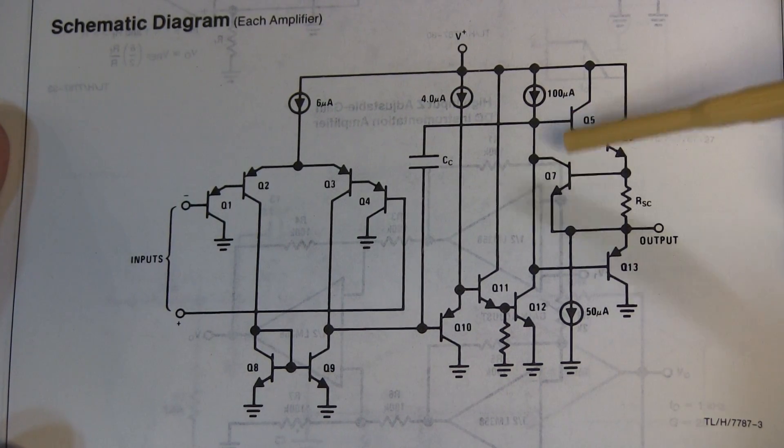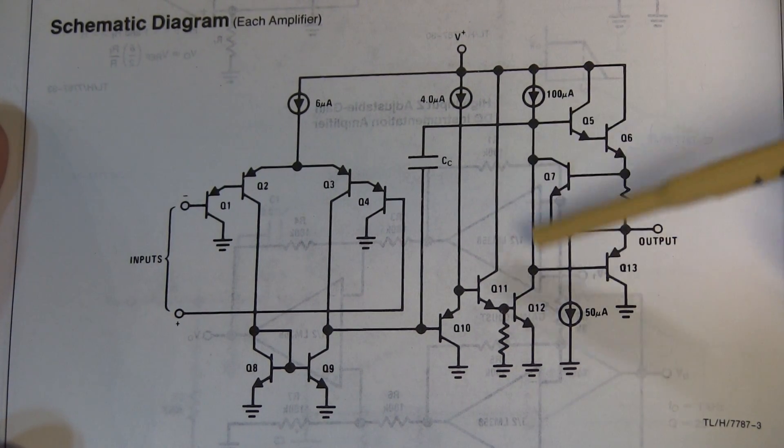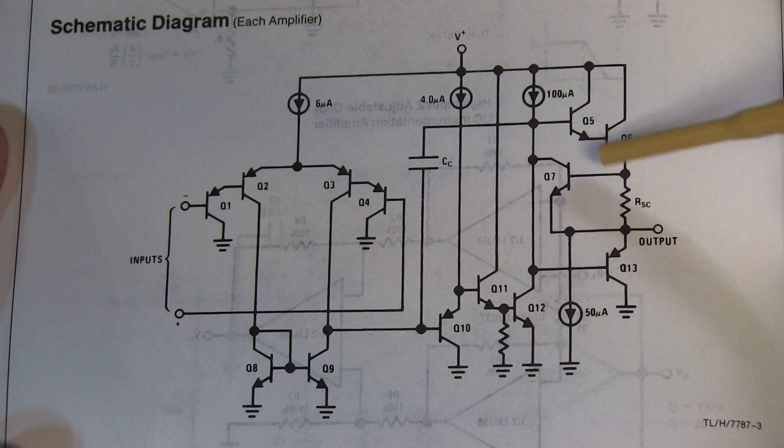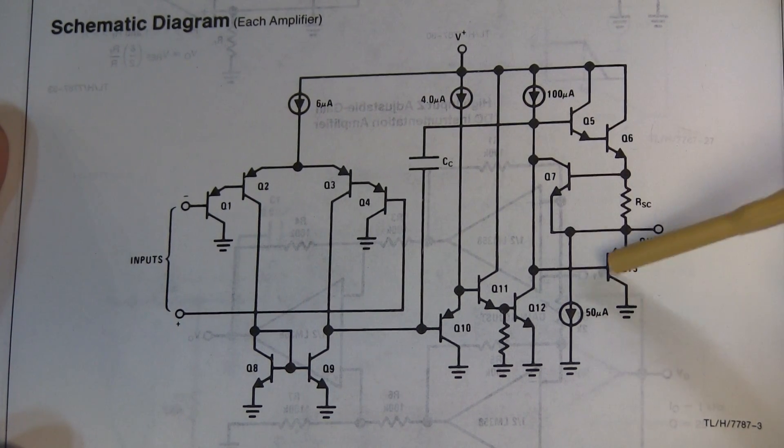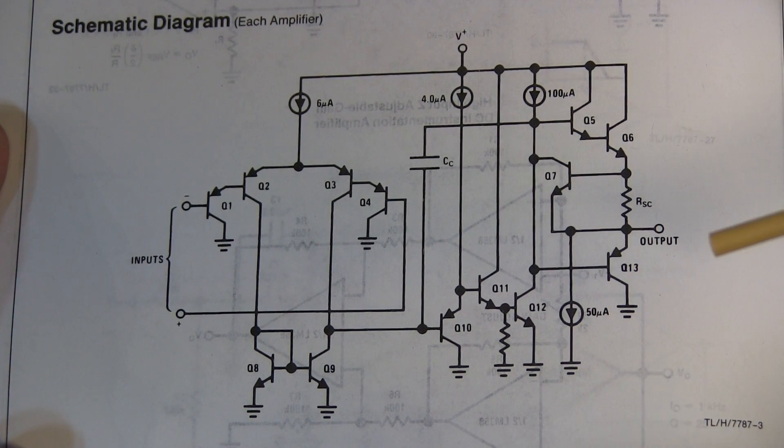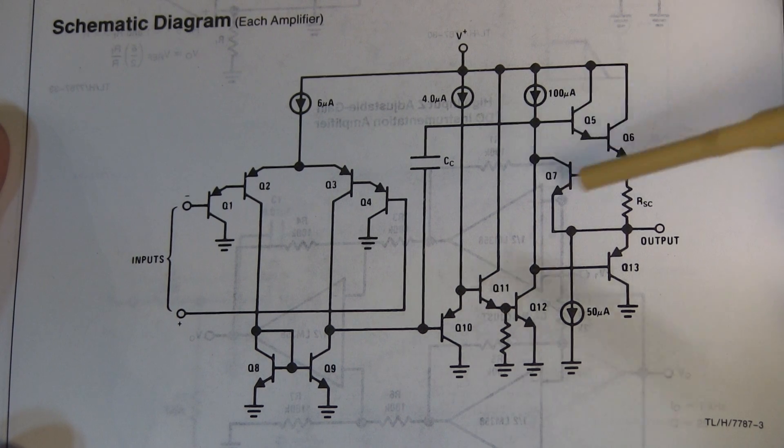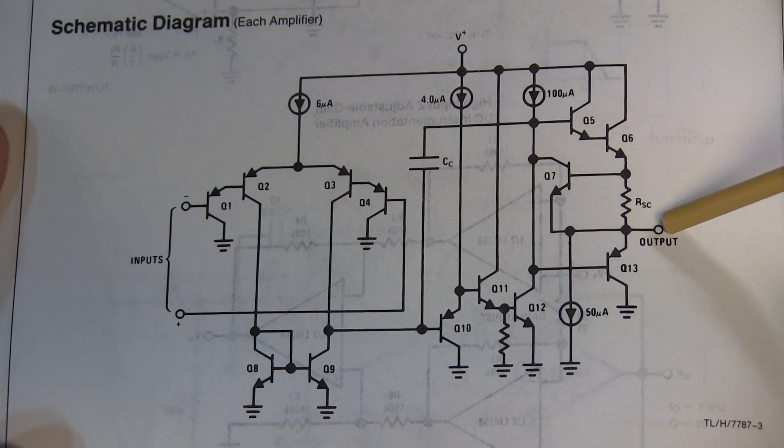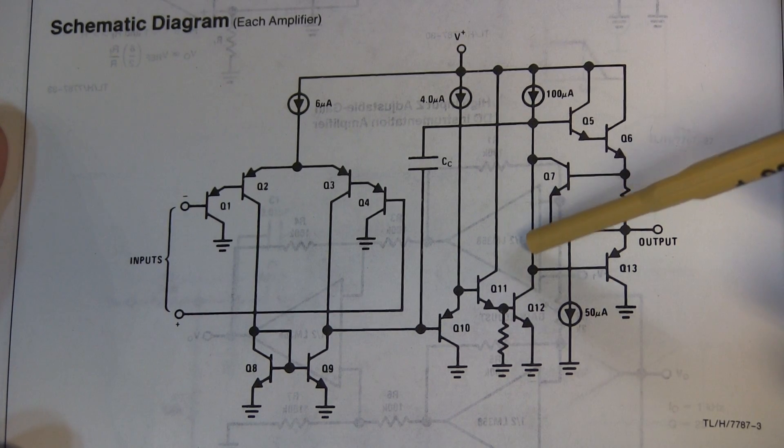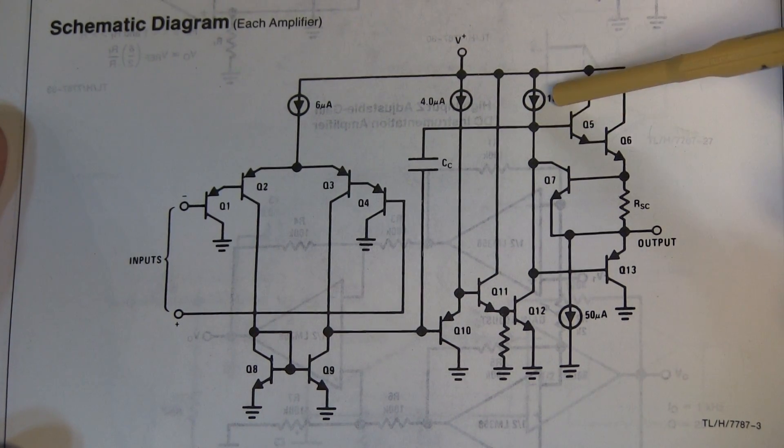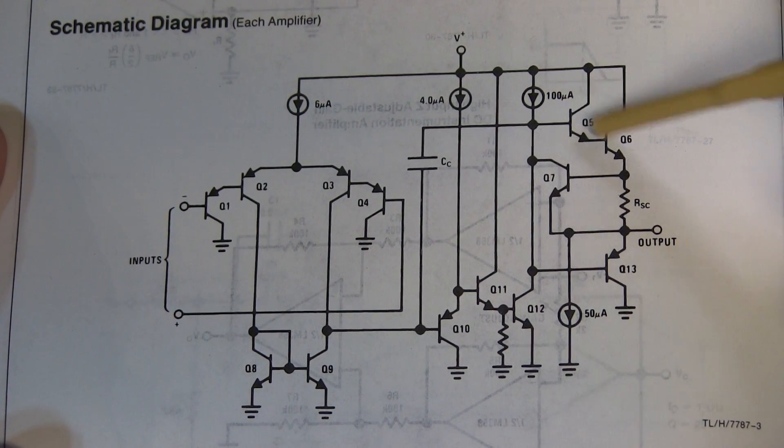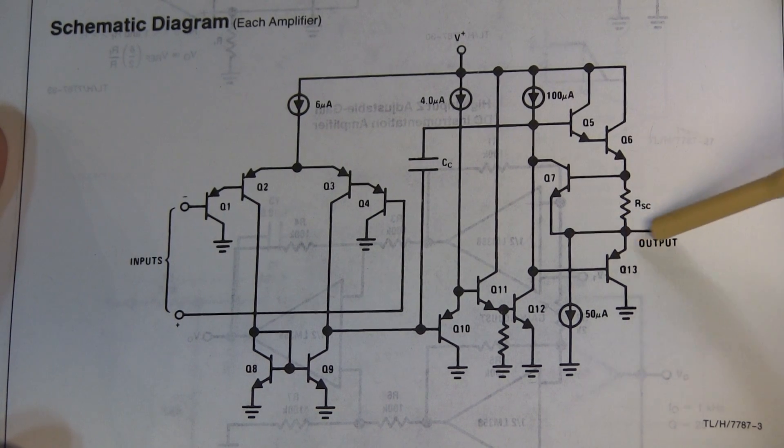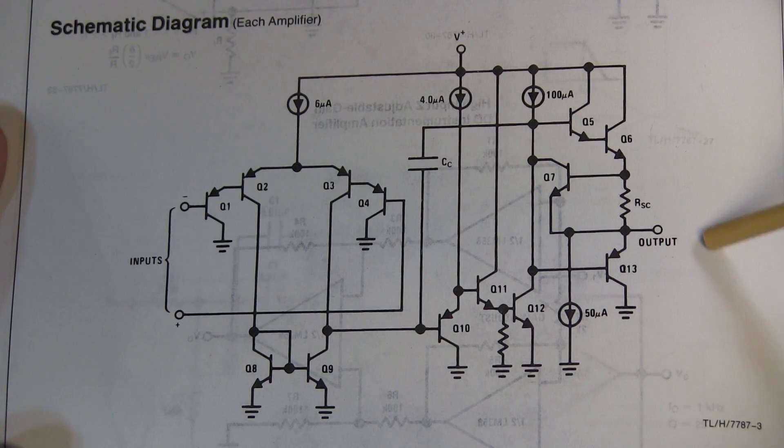We can see that Q5 and Q13 are tied to the same point, so certainly these transistors can't be on at the same time. So what happens is for situations where the output needs to source current, this output will rise up and turn on these two transistors and allow current to flow out of Q6 and out into the load.